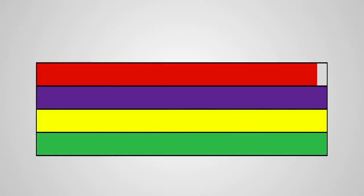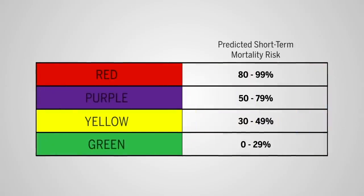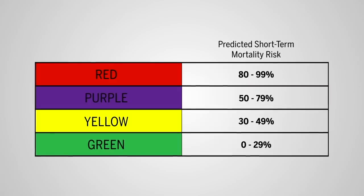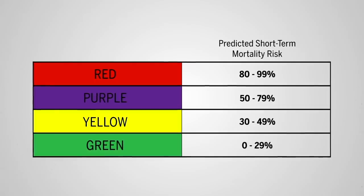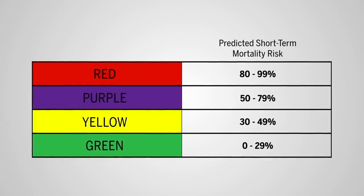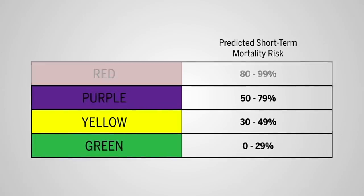In a level one triage scenario, patients who have a greater than 20% chance of surviving 12 months from the onset of critical illness, based on an evaluation of their clinical presentation at point of triage, should be prioritized. This includes those with color codes of green, yellow, and purple.